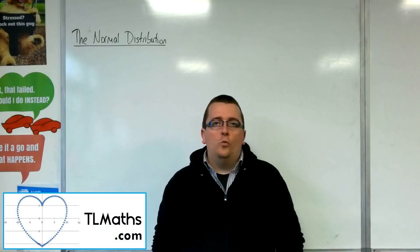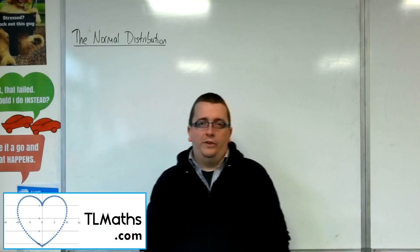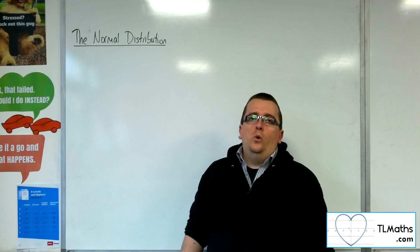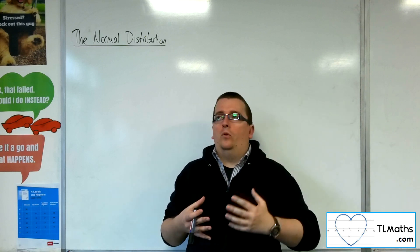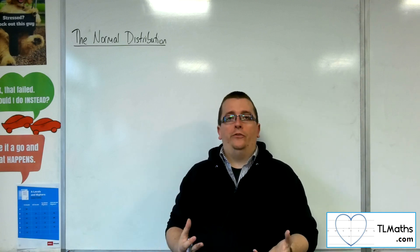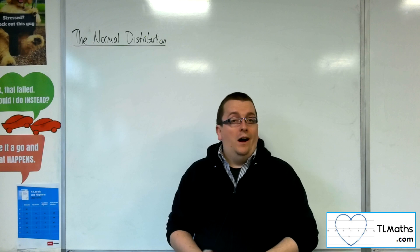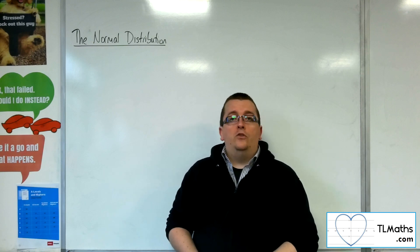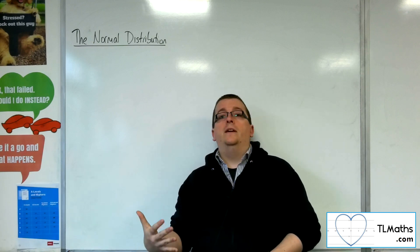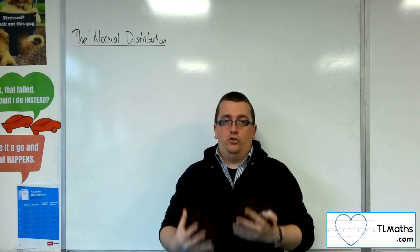Okay, in this section we are going to be looking at the normal distribution. So this is an example of a continuous probability distribution, unlike the binomial distribution and what we were looking at previously with discrete distributions.